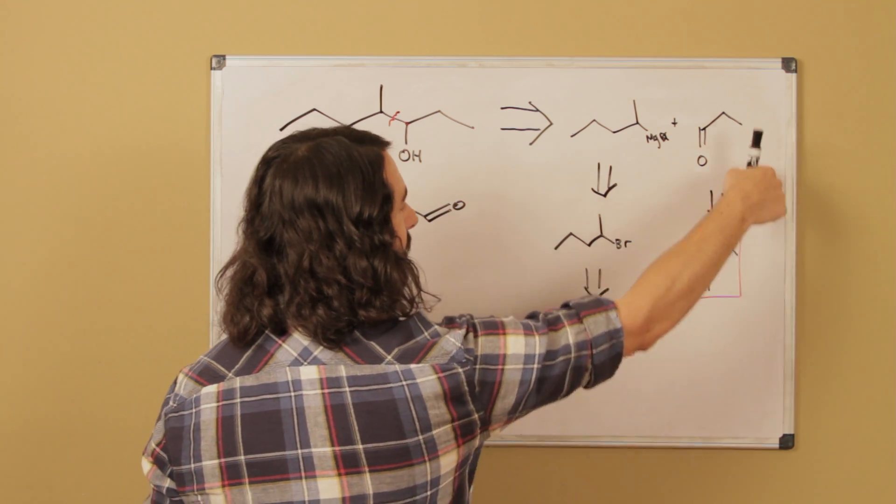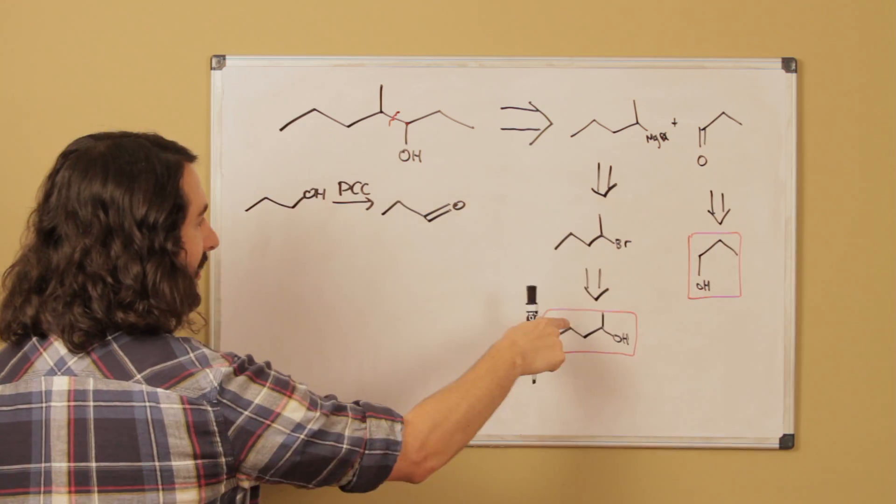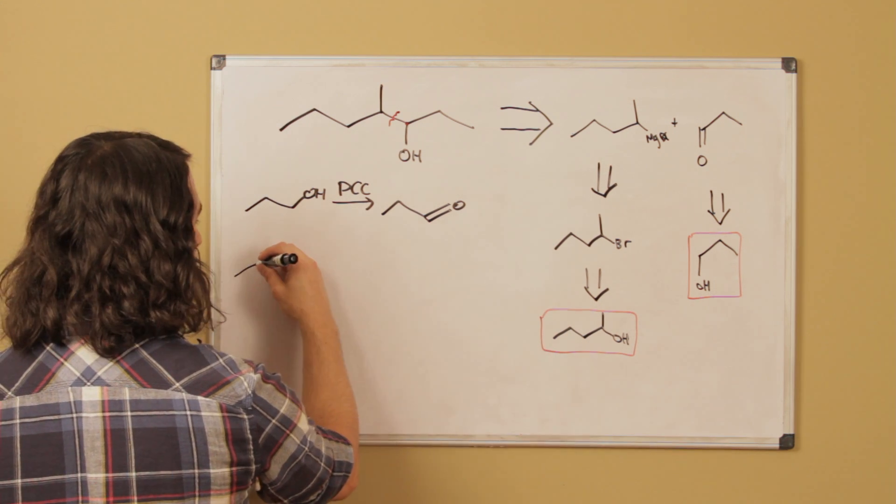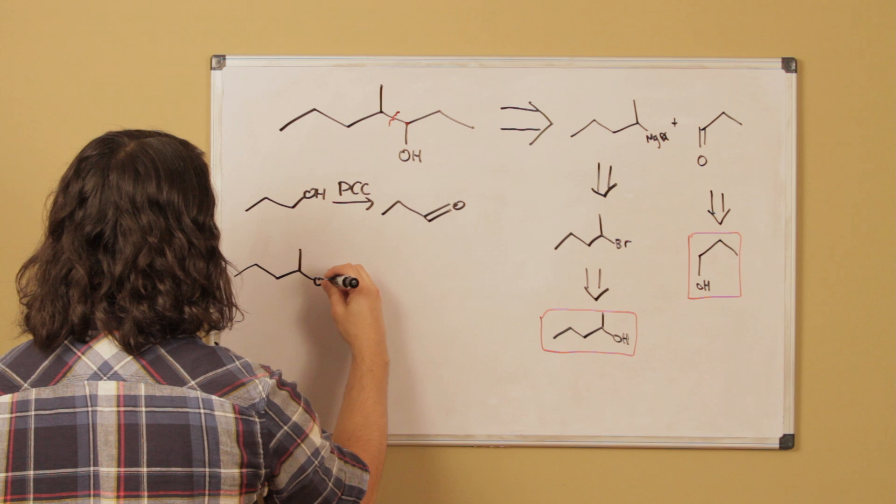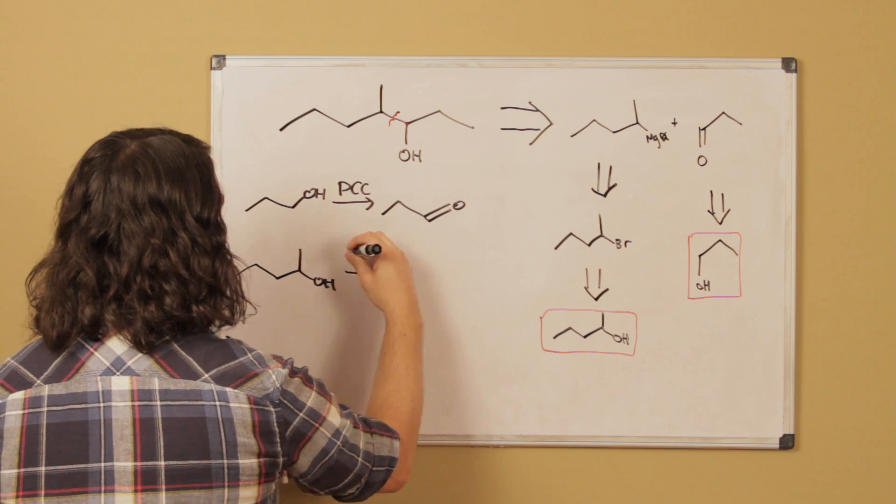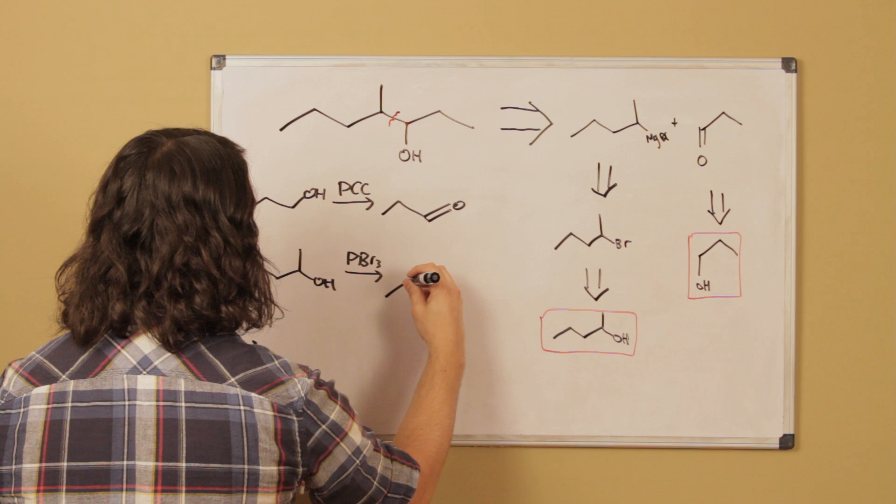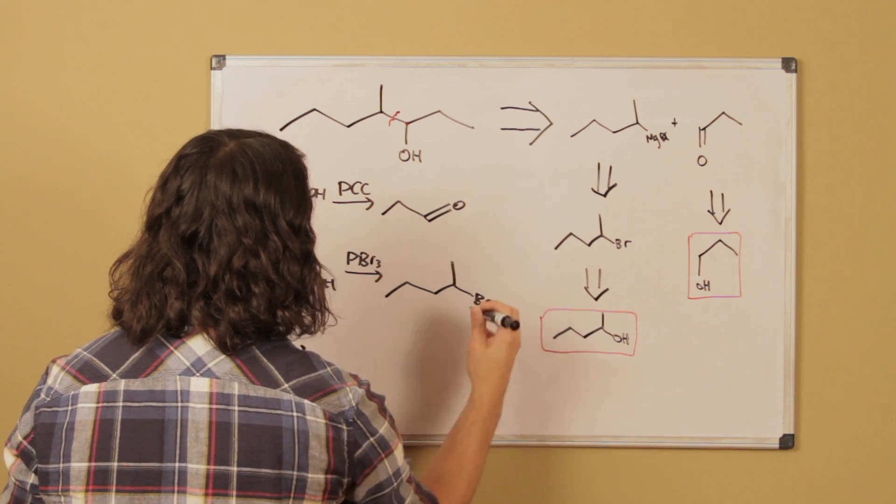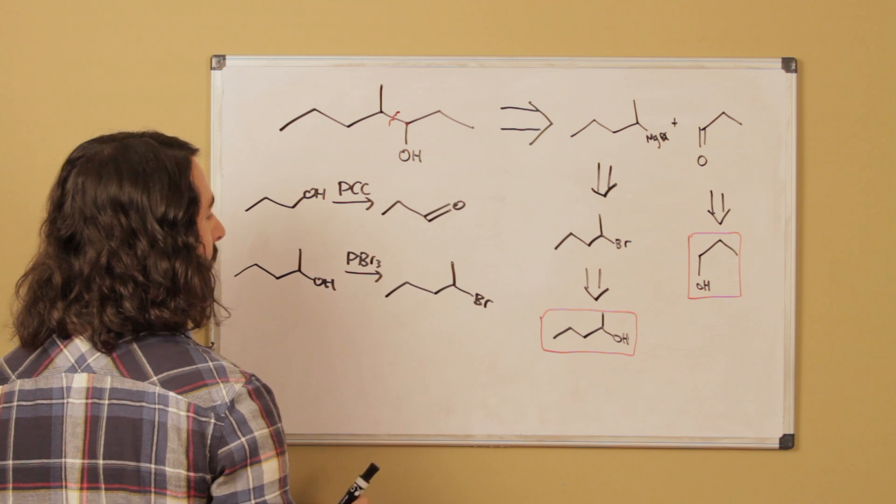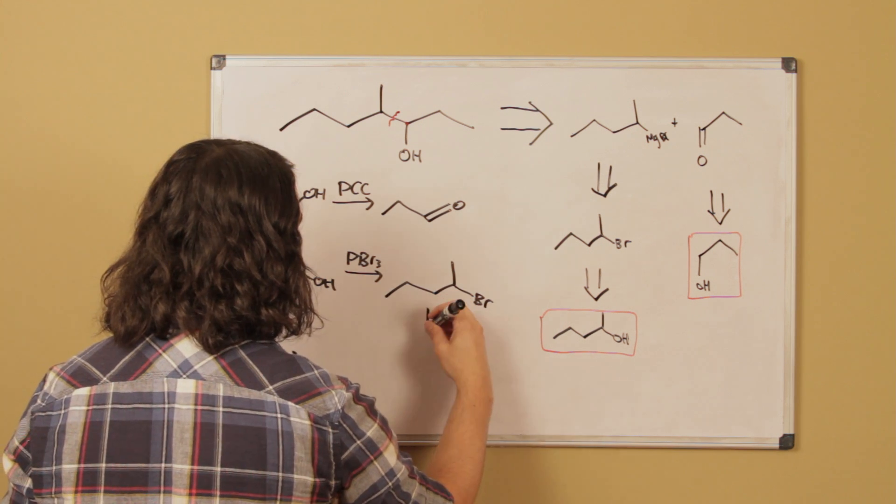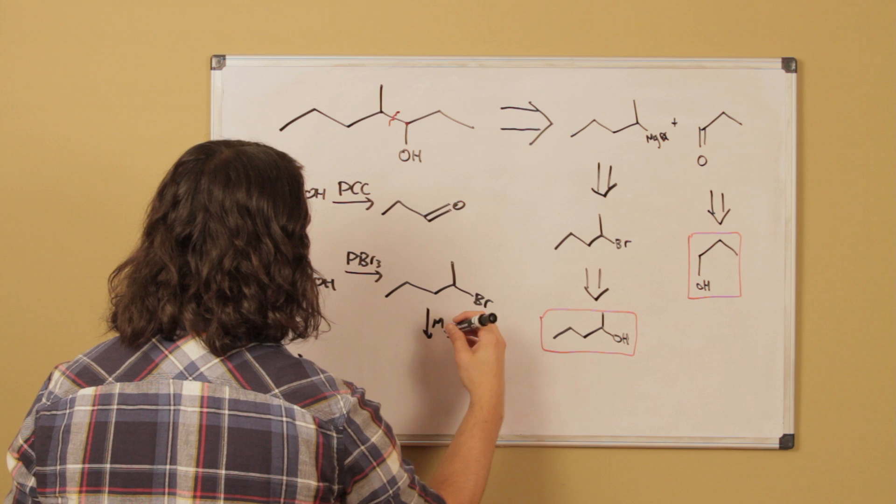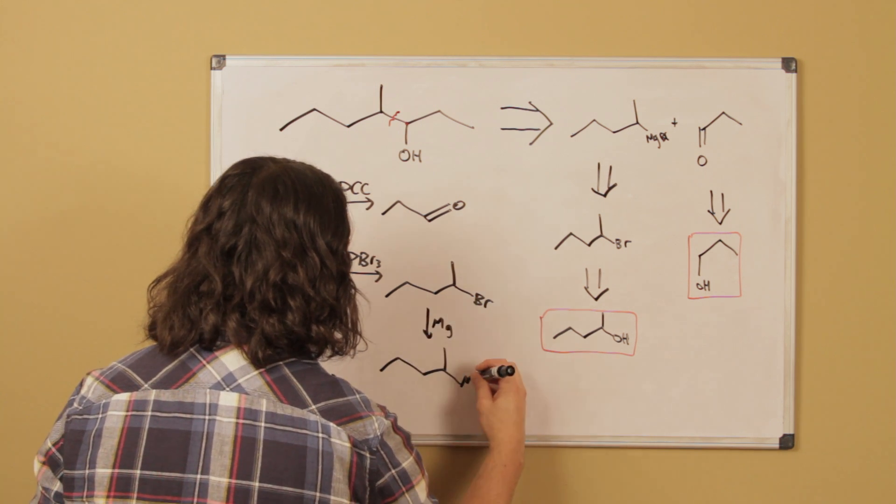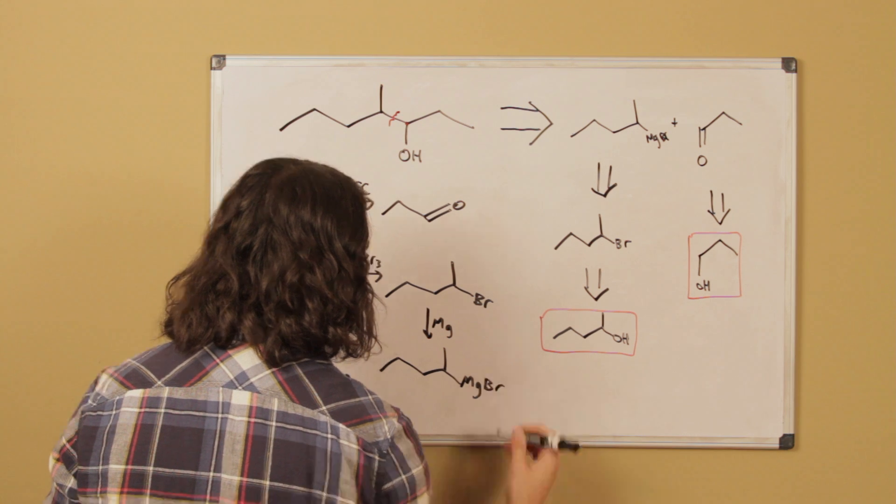Now let's also build up this fragment. So let's take our five carbon alcohol. We know that if we use PBr3, we can turn an alcohol into an alkyl bromide. And then we also know that if we use magnesium in ether, we can turn that into a grignard reagent.